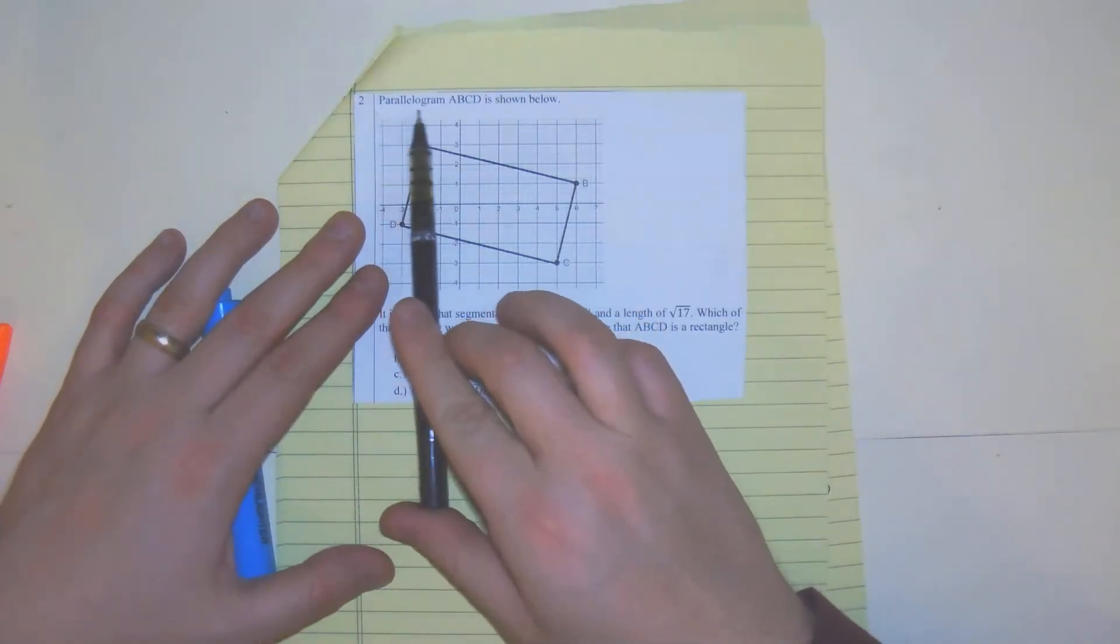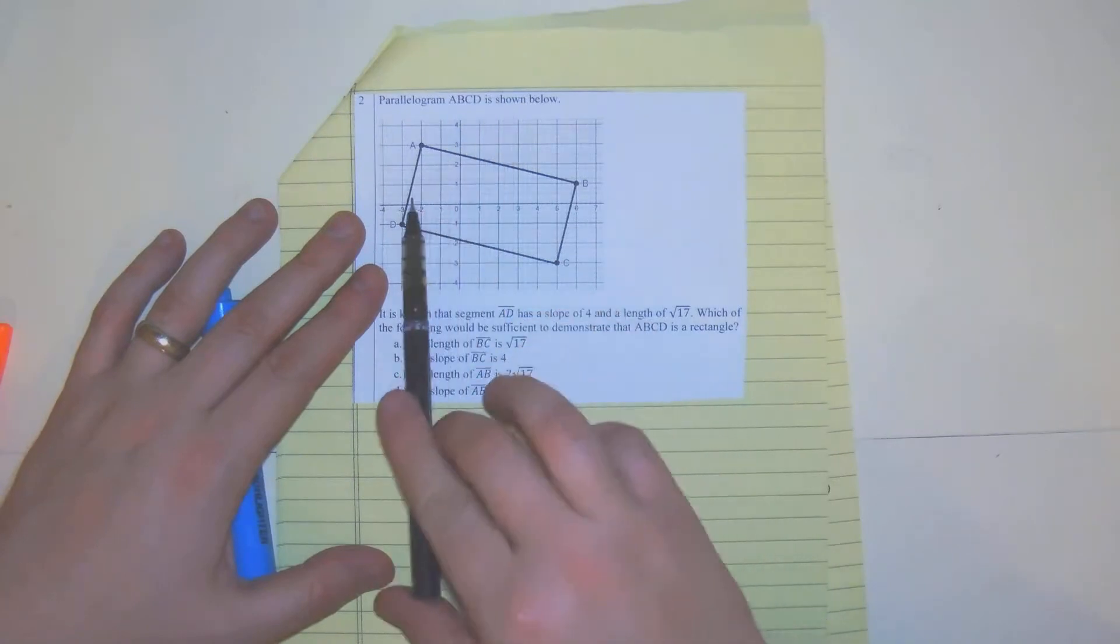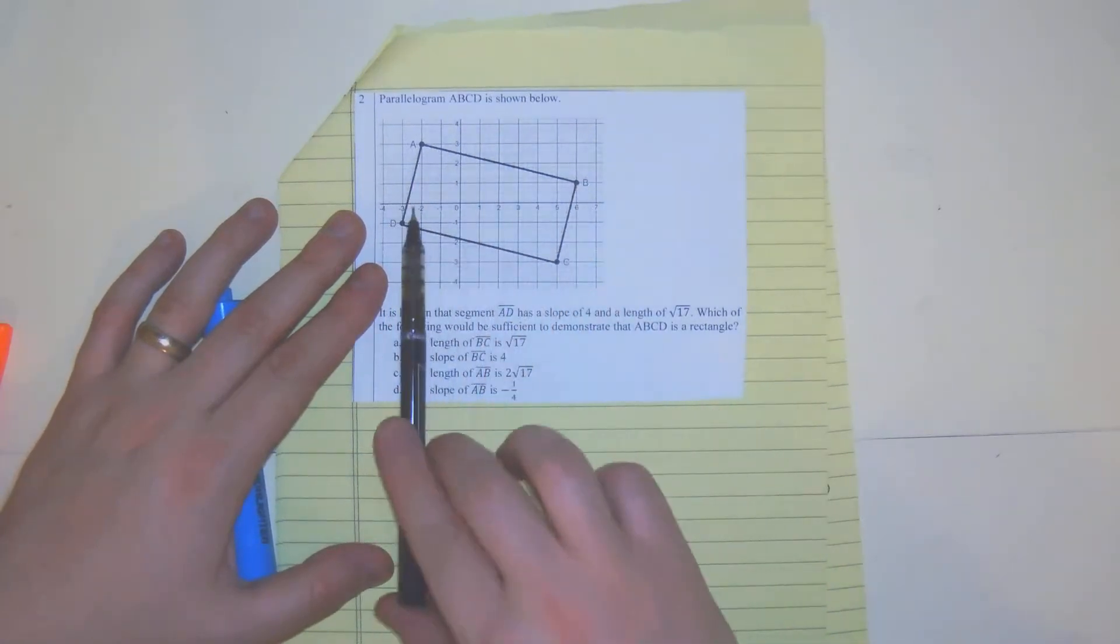So we're on number two. Number two says parallelogram ABCD is shown below.